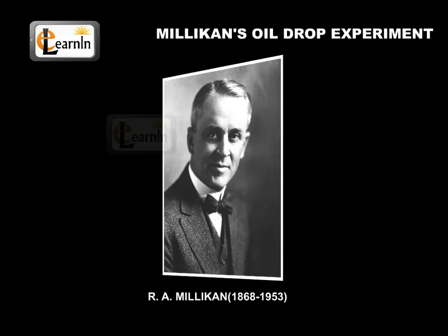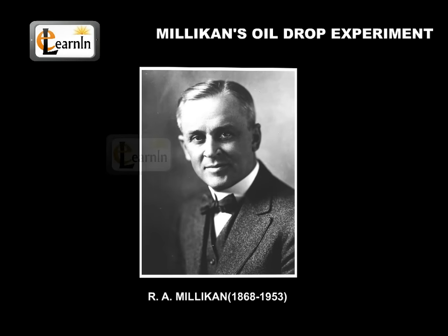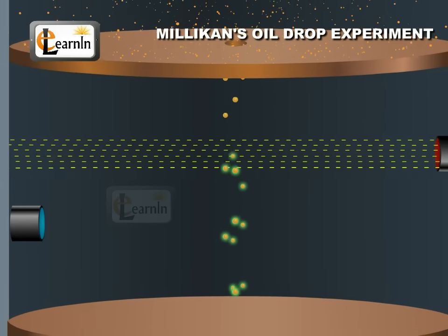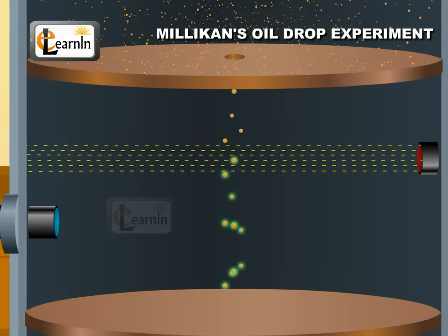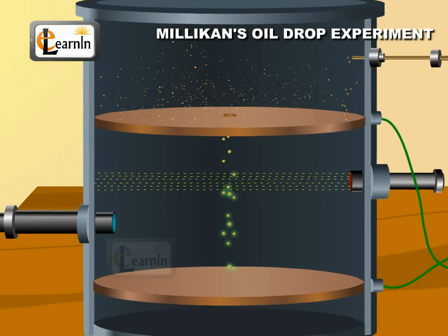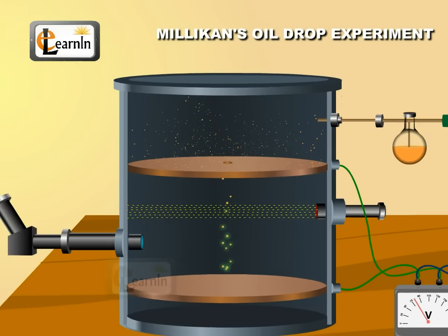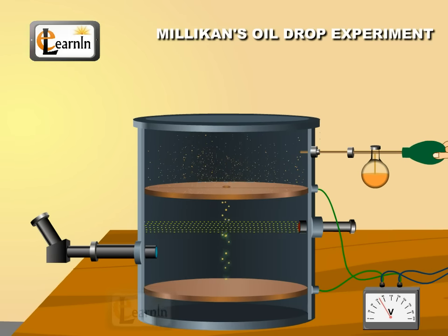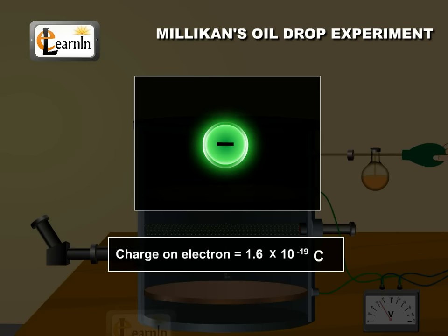Later, R.A. Millikan looked to determine the charge on the electrons. The famous method that he devised between 1906 and 1914 to measure the charge E of an electron is known as the Millikan's Oil Drop Experiment. Using this method, he calculated that the charge on an electron was about 1.6 times 10 to the power negative 19 coulombs.